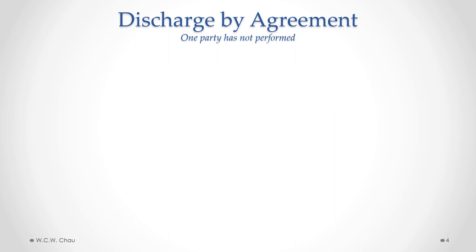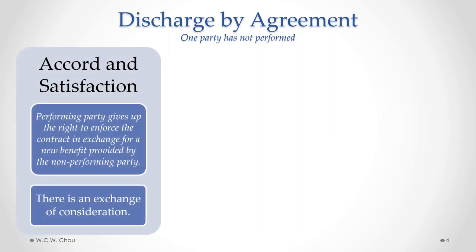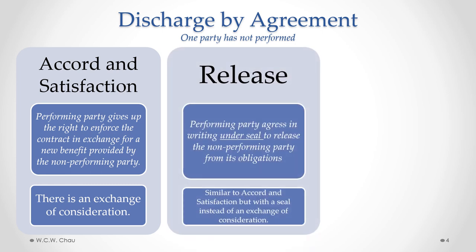Discharge by agreement can also occur in situations where one party has not performed what they're supposed to do under the contract while the other party has. Under accord and satisfaction, the performing party gives up the right to enforce the contract in exchange for some kind of new benefit being provided by the non-performing party. There is an exchange of consideration, making this a binding contract to discharge the non-performing party.